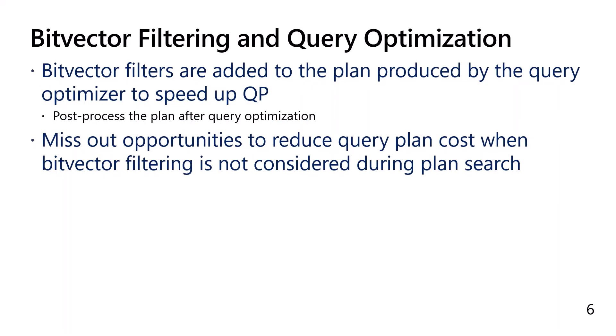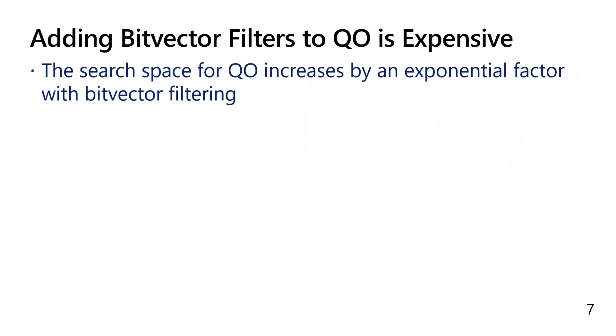What have we learned so far? Bitvector filters are added to the plan produced by the optimizer to speed up query execution. However, we miss out on big opportunities to reduce plan cost if the optimizer does not consider bitvector filters during plan search. The bad news is that the search space of the query optimizer will increase by an exponential factor if bitvector filters are considered.